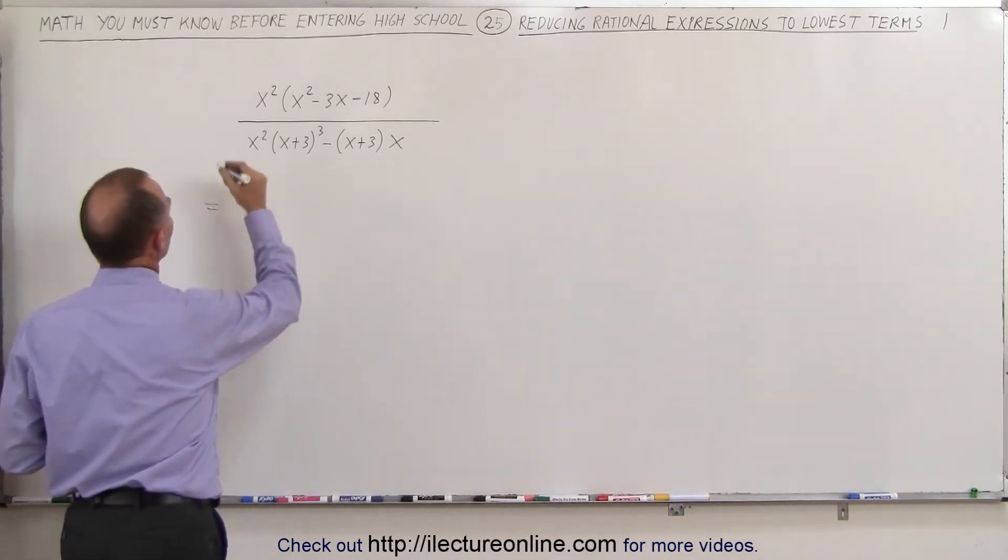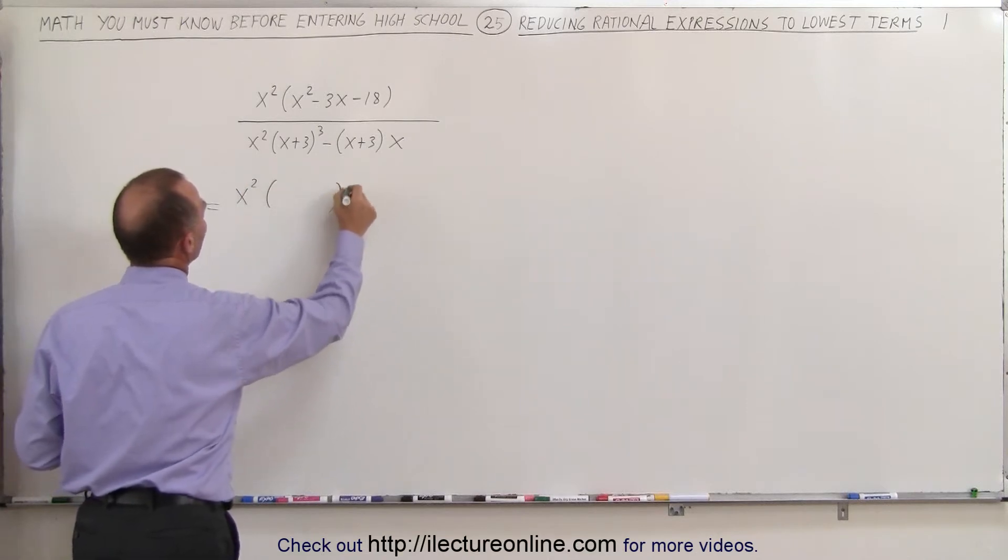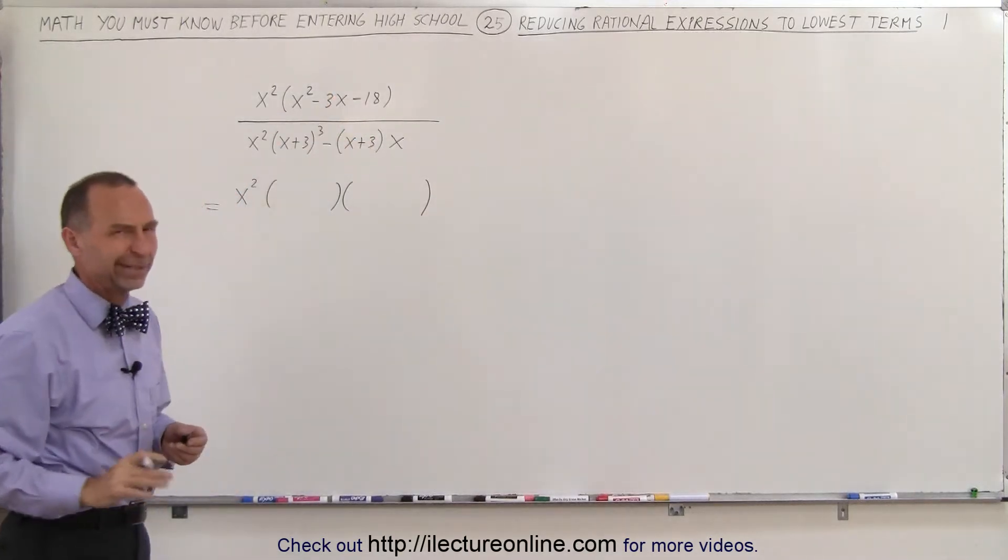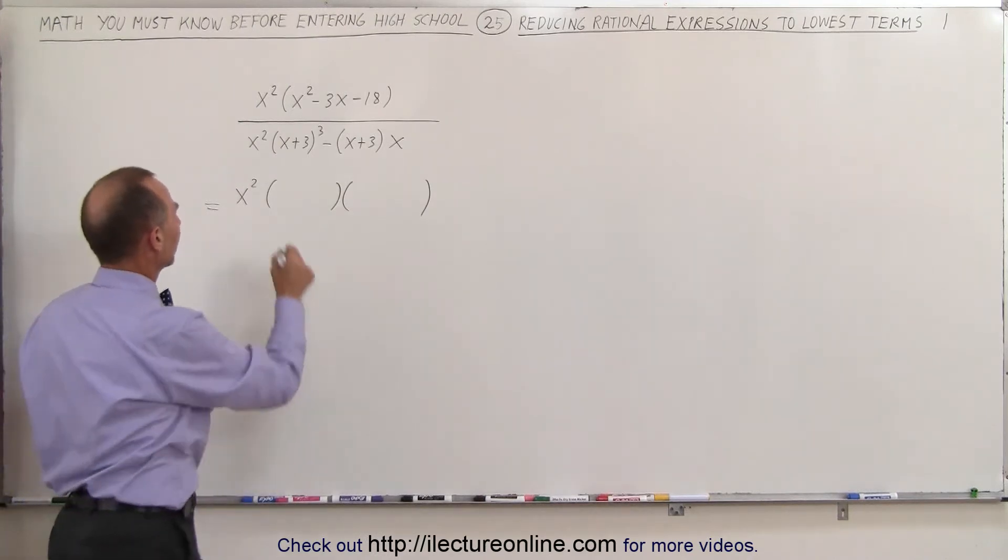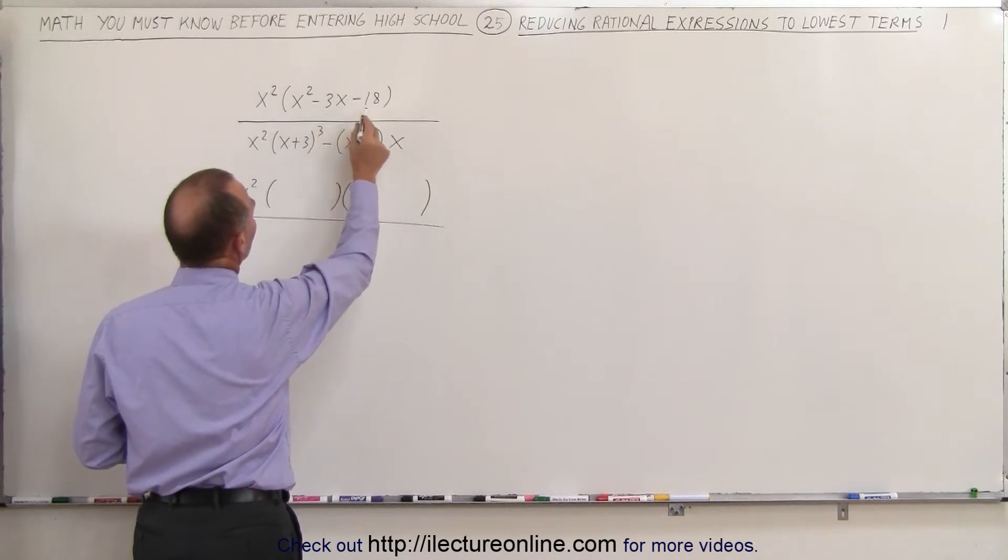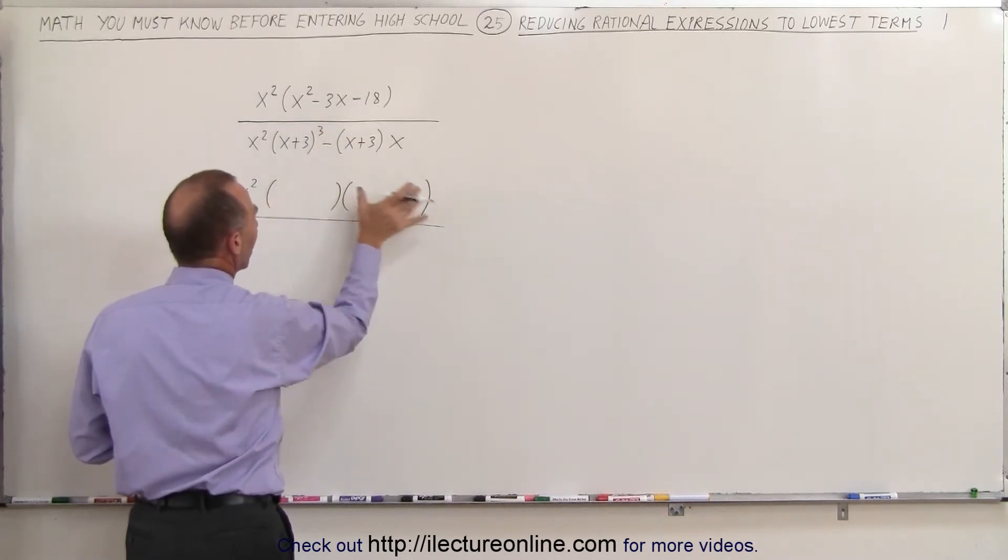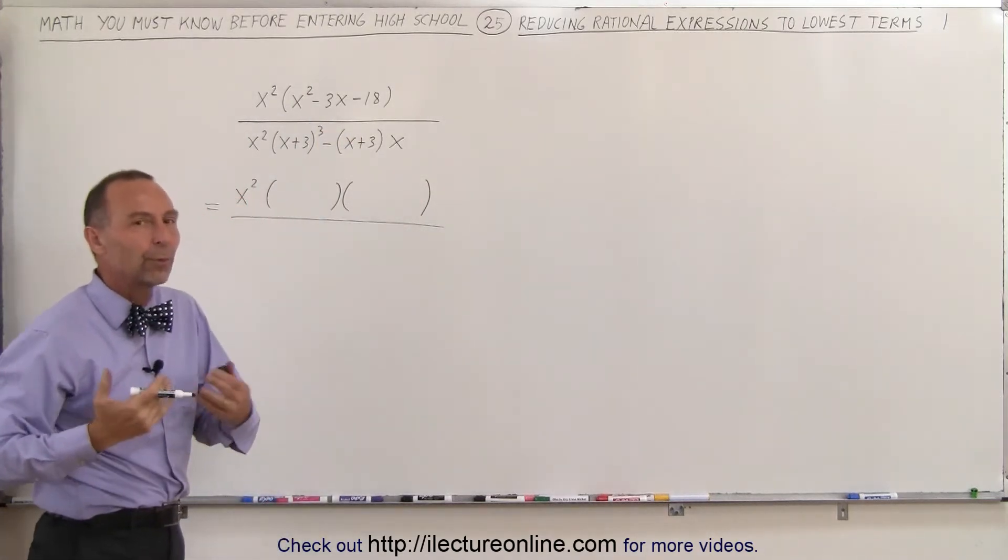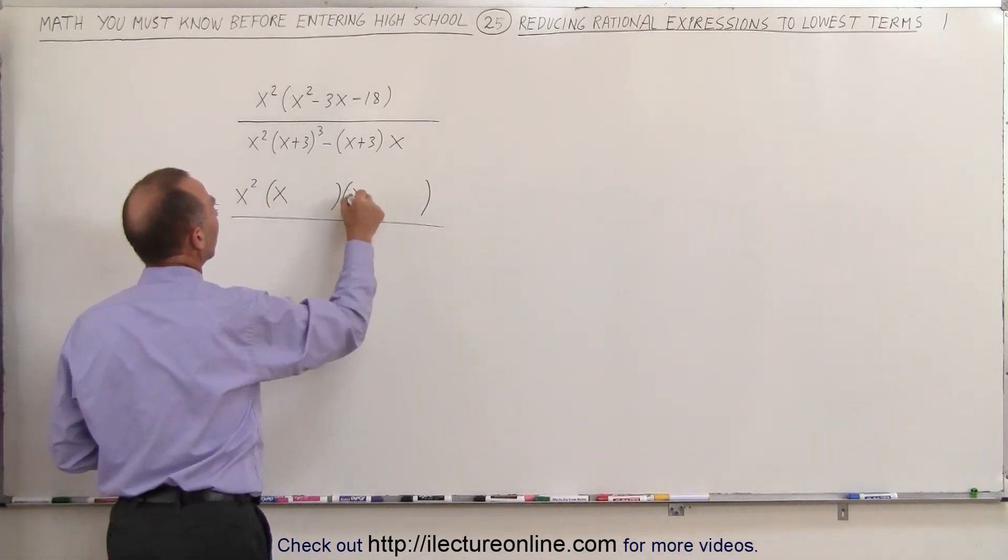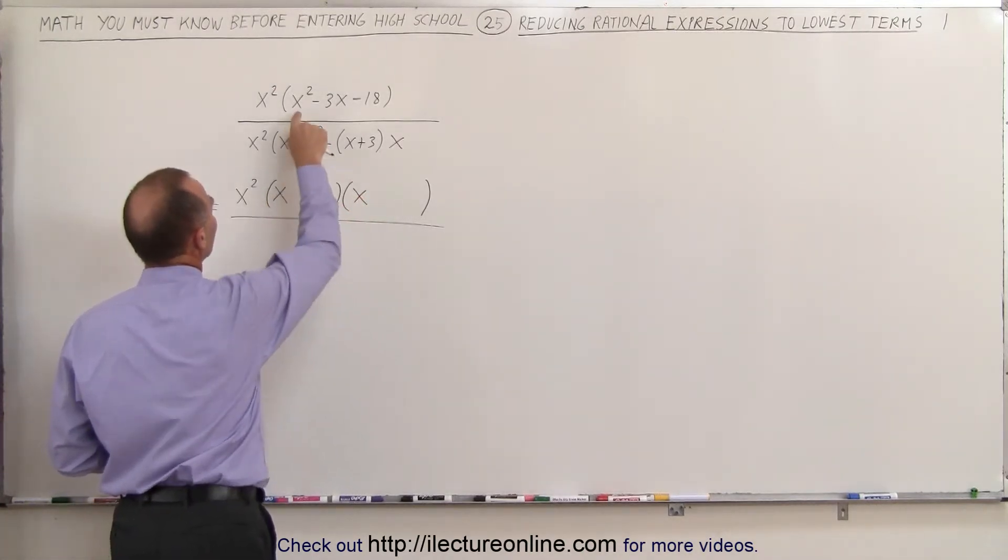So first of all, we can see that the numerator can be written as x squared times the product of two binomials, thus of course assuming that this can be factored, and I think it can be. So let's try that. So instead of writing x squared minus 3x minus 18, we're going to write it as a product of two binomials, which means we're going to write it in its factored form. We start out by writing an x there and an x there because x times x gives us x squared.